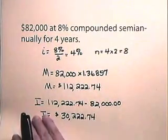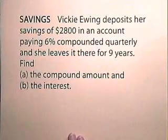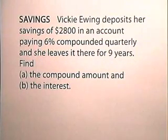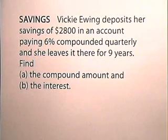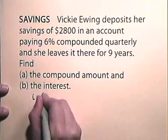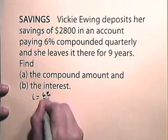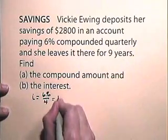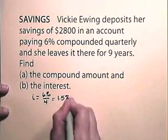Now let's do another compound interest problem. Vicki Ewing deposits her savings of $2,800 in an account paying 6% compounded quarterly and she leaves it there for nine years. Find the compound amount and the interest. Using the table, the interest rate per period is 6% ÷ 4 = 1.5%.